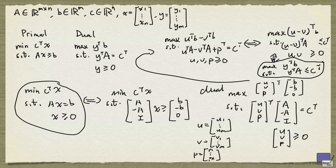The duality results carry over to this formulation. In particular, if you pick a feasible solution to the primal, its objective function value is bounded below by the objective function value of any feasible solution to the dual. And if the primal has an optimal solution, then the dual will also have an optimal solution whose optimal value coincides with the optimal value of the primal problem.